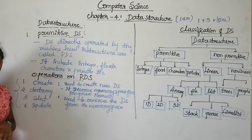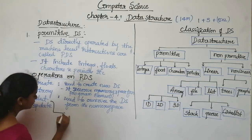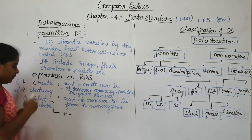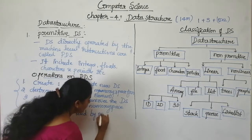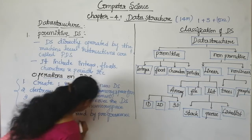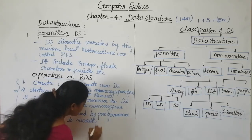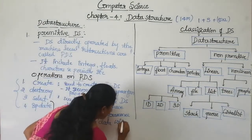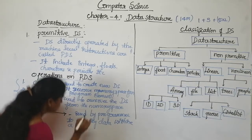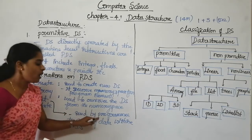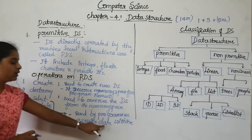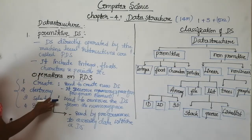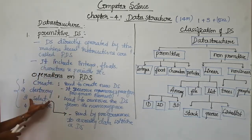The third operation on the primitive data structure is the select operation. This select operation can be used by the programmer to access the data within a data structure.